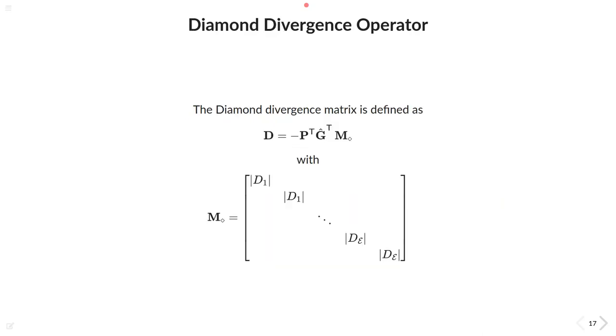And following the formal definition of the divergence, we obtain it by taking the negative transpose of the gradient and therefore really naturally include the whole restriction step from earlier and multiply it with a diagonal matrix containing the diamond areas, as you can see here.